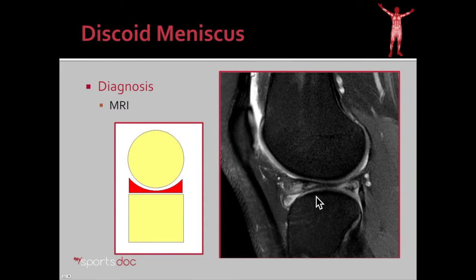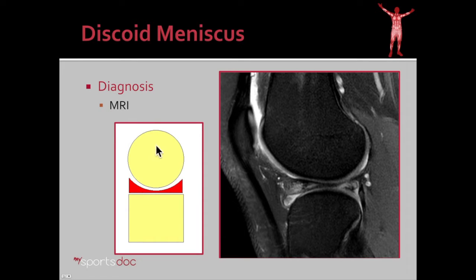Now let's look at a discoid meniscus. With a discoid meniscus, during embryonic development instead of the middle part going away and transforming from a disc into that c-shaped gasket, the meniscus stays intact all the way across the joint. So instead of a c you have a disc. As the weight of the femur comes down it's putting 100% of the weight on the meniscus, so as this person walks around they're walking on their meniscus rather than having the meniscus support them and move out of the way when necessary.